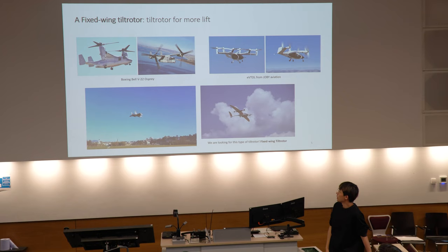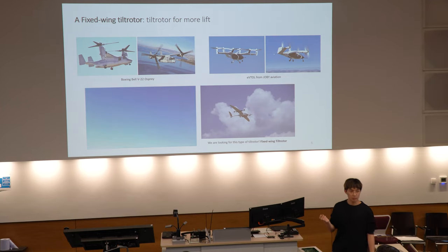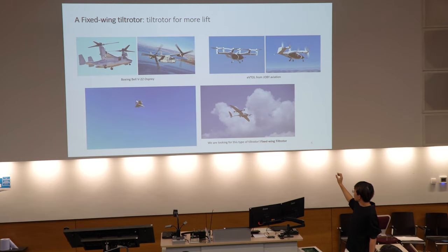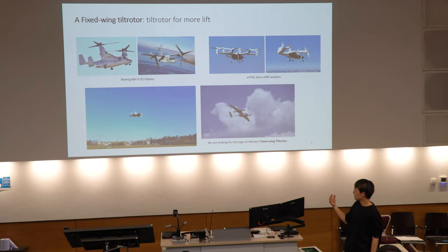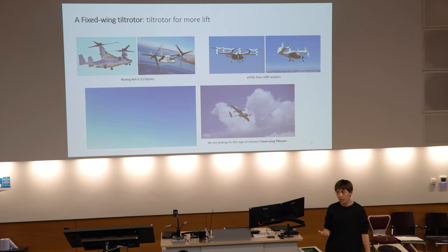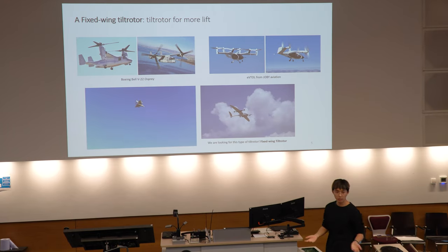These are some examples of tiltrotor aircraft. The top two are examples of tiltrotor aircraft, and the platform I'm researching is the one shown below. That aircraft has a larger main wing than the aircraft above, which means even though it may be heavier, it can glide better. And if you see the GIF on the left, you can see how the aircraft behaves like a helicopter when it takes off, but after the motors tilt forward, it behaves just like a fixed-wing aircraft.